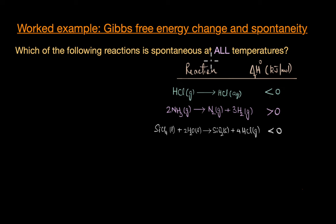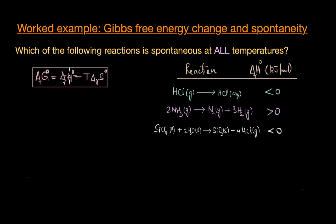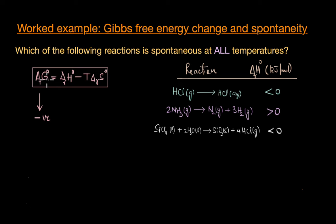The question asks: which of the following reactions is spontaneous at all temperatures? Reactions are given along with their ΔH° values. We can determine spontaneity using the Gibbs equation: ΔG°r = ΔH°r − TΔS°r, where ΔG° is the standard Gibbs free energy change, ΔH° is the standard enthalpy change, T is temperature, and ΔS° is the standard entropy change. A reaction is spontaneous if ΔG° is negative, and from the signs of ΔH° and ΔS° we can predict this.